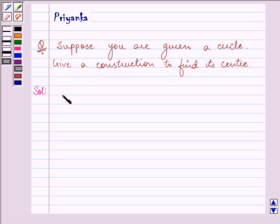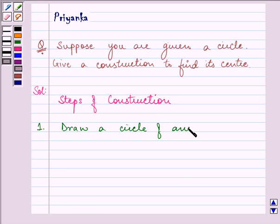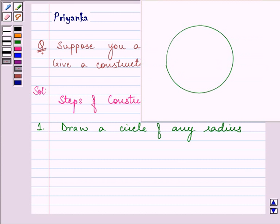Let us start with our solution and we will be writing down the steps of construction simultaneously. The first step is to draw a circle of any radius like this. Here we have a circle of any radius.